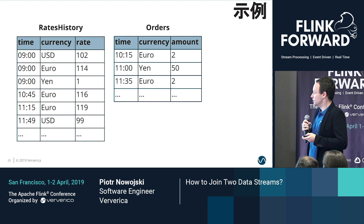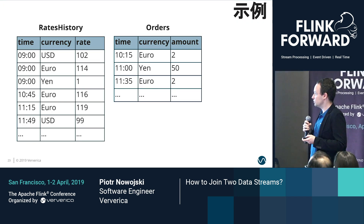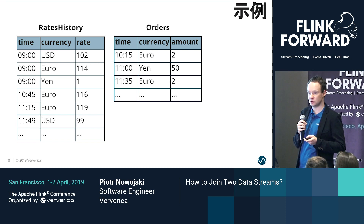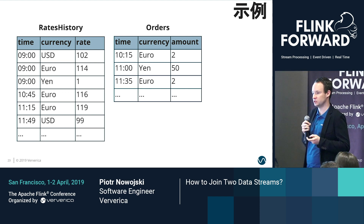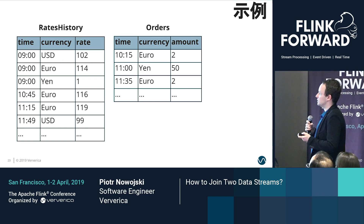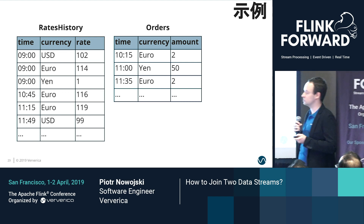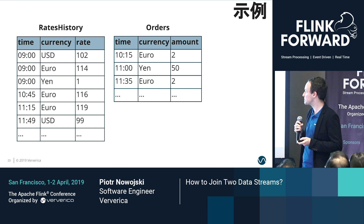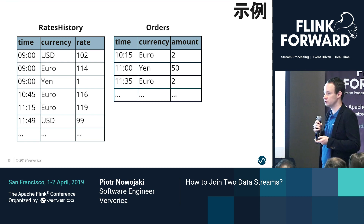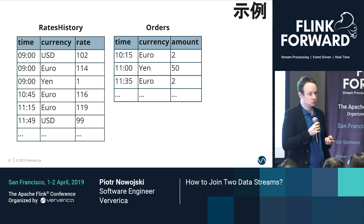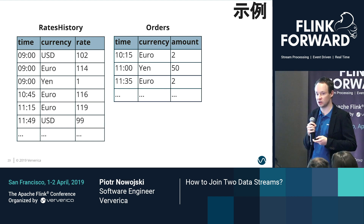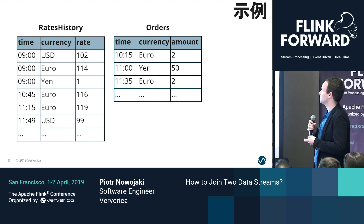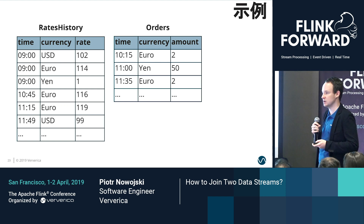Namely, temporal table joins. To explain how they work, let's look at another example. We have two tables: rates history, which is a stream of recorded currency exchange rates read from Kafka — at 9 o'clock we recorded that the USD exchange rate was 102, while later at 11:49 we noted that USD was traded for 99. The second table is orders, a log of transactions recorded in foreign currencies — like at 10:15 we recorded a transaction for 2 euros. What we want to do is convert currencies from the orders to a common currency, enriching the order stream with another stream that is also evolving and updating values for certain keys.